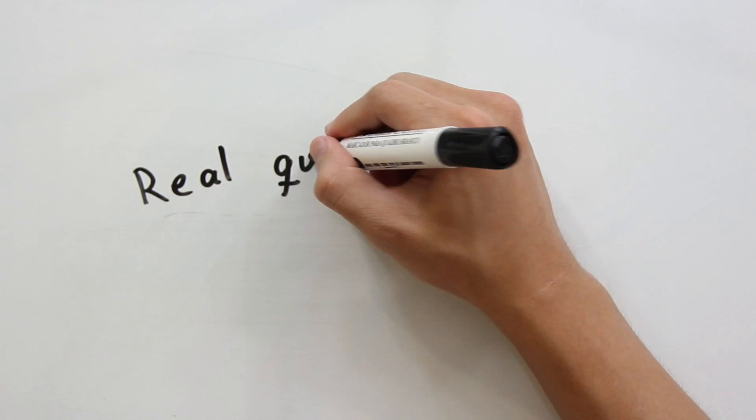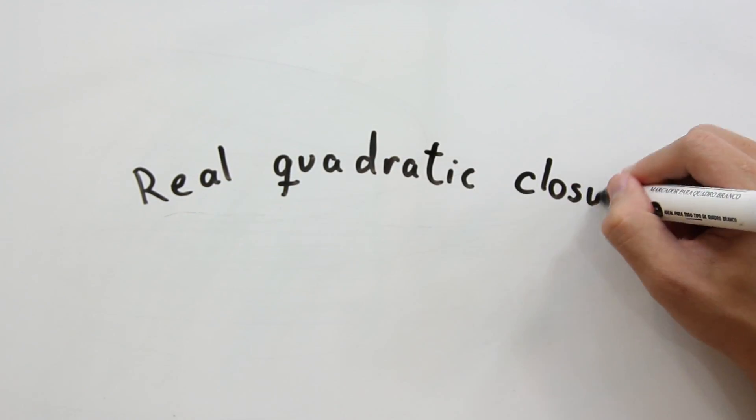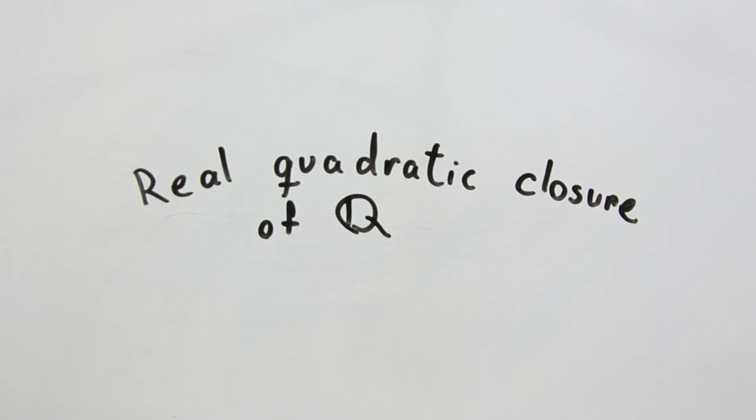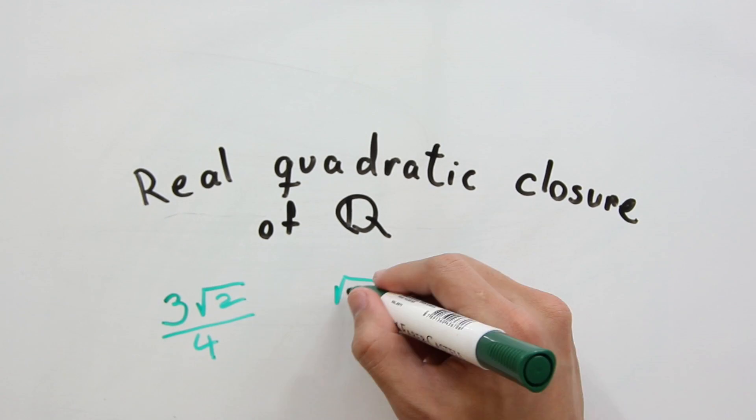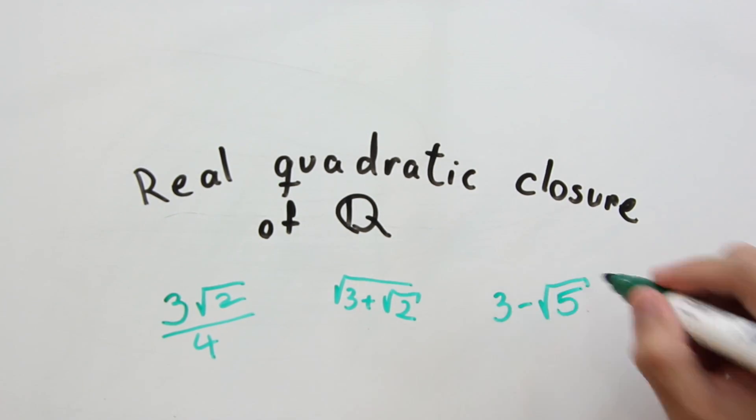The reason, in short, is that given a rational number we can only construct numbers that belongs to the real quadratic closure of the rational numbers. But let's leave this explanation to another video.